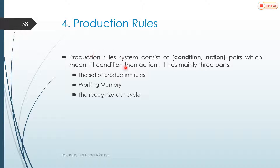If condition, then action. A production rule has mainly three parts: first is the set of production rules, second is the working memory, and third is the recognize-act cycle.